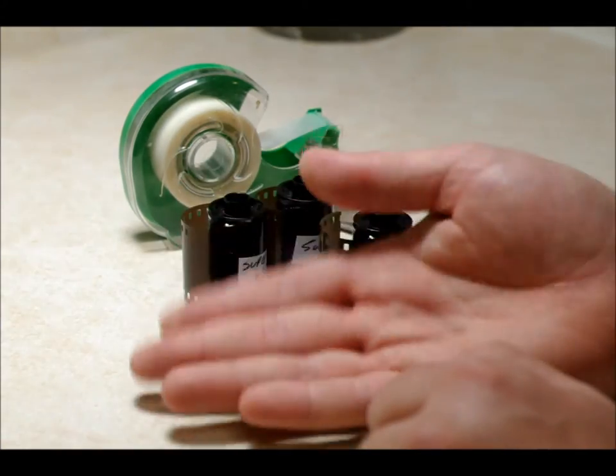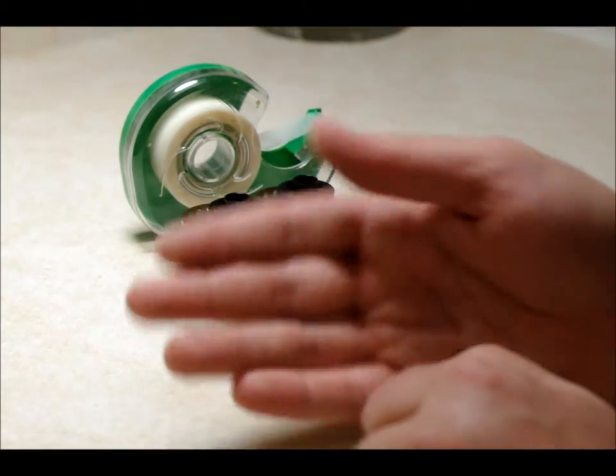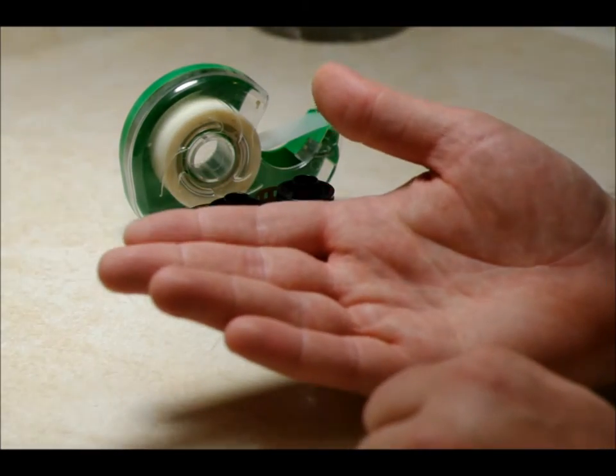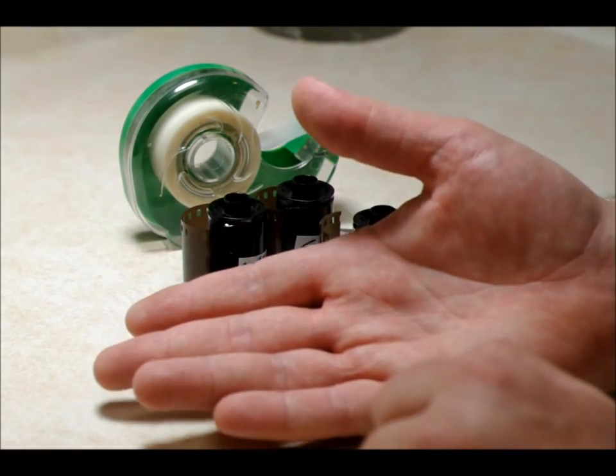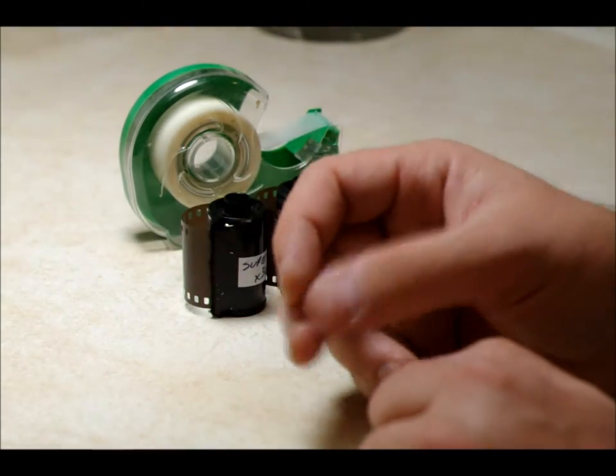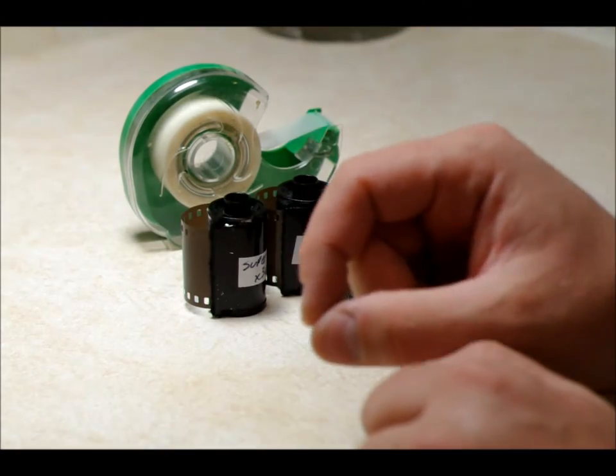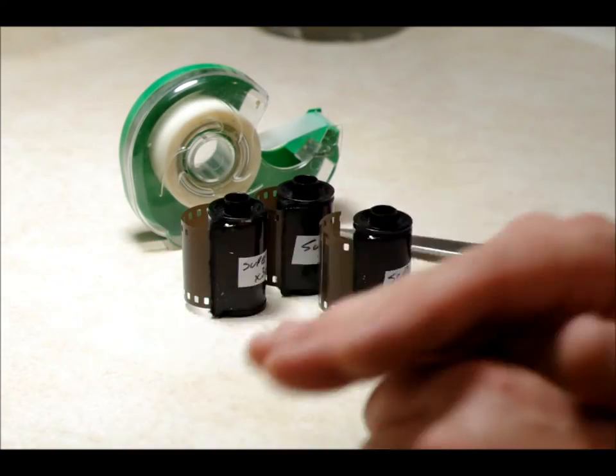Anyway, so when you put the film in backwards, the light hits the red layer first and so the red layer absorbs most of the light. And so the other colors don't register. So that's why everything appears red scale.